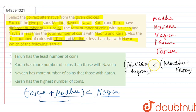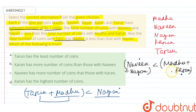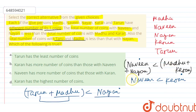तो एक चीज़ समझ में आई कि जो Nayan के पास coins हैं वो Madhu से ज़्यादा हैं। अब वापस पहली condition पर आते हैं: यहाँ पर जो coins Nayan के पास हैं वो Madhu के comparison में ज़्यादा हैं, तो यह condition तभी correct हो सकती है जब Nayan के coins Karan से कम हों, because Madhu और Karan के coins का summation Naveen-Nayan के summation से ज़्यादा आया है — यह तभी possible है जब Nayan के coins Karan से कम हों।